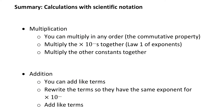Let's wrap up. For multiplication with scientific notation, remember you can multiply in any order — that's the commutative property. Multiply the powers of 10 together by adding the exponents (Law 1 of exponents: keep the base, add the exponents), and multiply the other constants together. For addition, you can only add like terms, so rewrite terms so they have the same exponent for the times 10 to the power of something, then add. If you find this concept tricky, I suggest going back and watching the video again — it might make more sense the second time around.